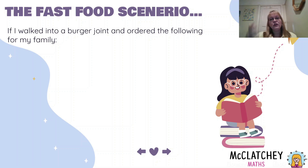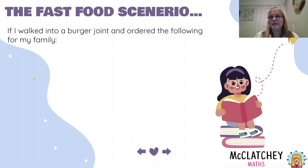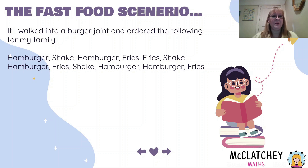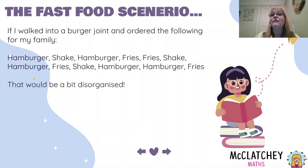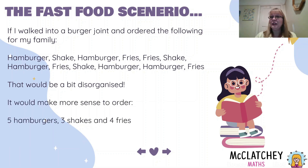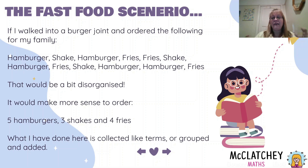I'm going to give you a real life scenario so you can understand how this works. Let's imagine we're walking into a hamburger shop and we want to order something for our family. You could walk up to the counter and say: I have a hamburger, a shake, a hamburger, a fries, a fries, a shake, a hamburger, a fries, a shake, a hamburger, hamburger, fries. The person behind the counter would probably get a little bit annoyed because of how disorganized your order is. Wouldn't it be better to work out how many hamburgers there were, how many shakes, and how many fries first, and then say: I want five hamburgers, three shakes, and four fries? What I've done is collected or gathered or grouped my like foods together.